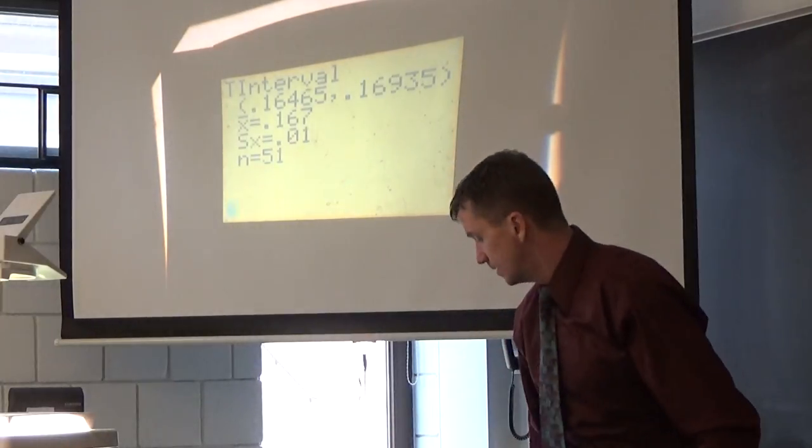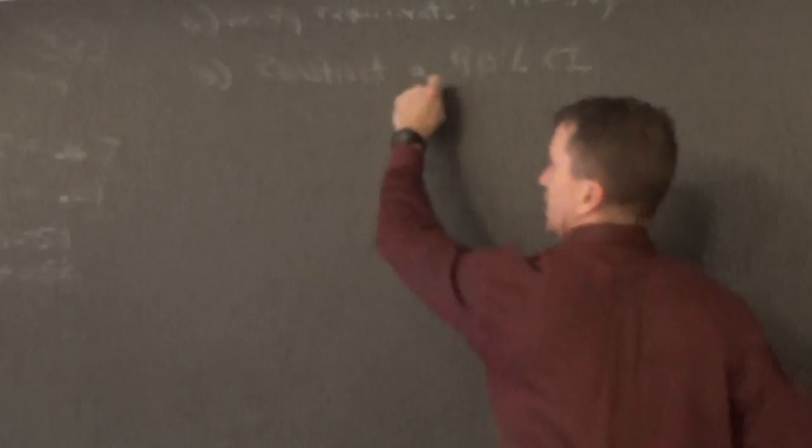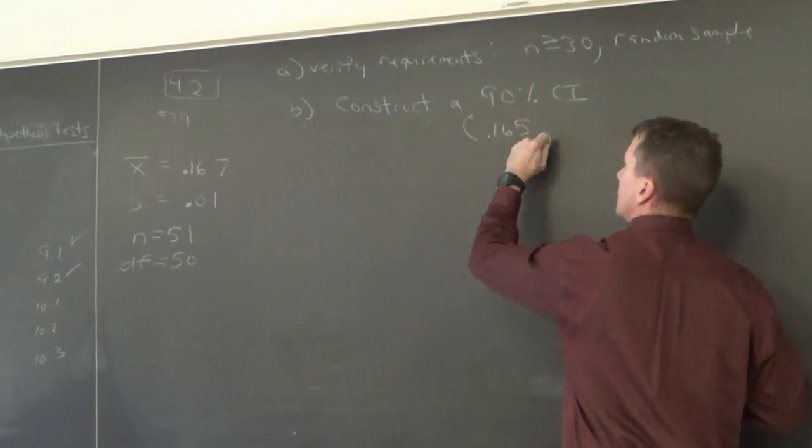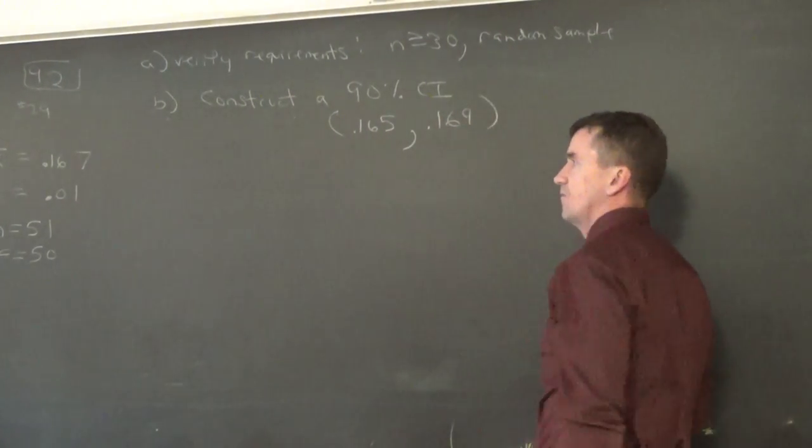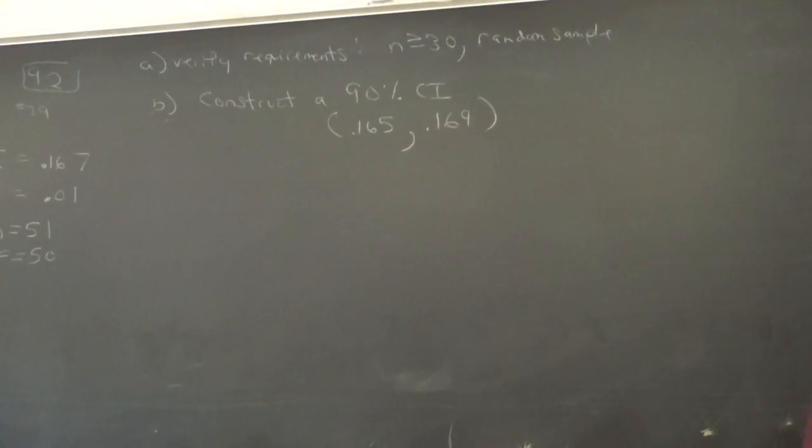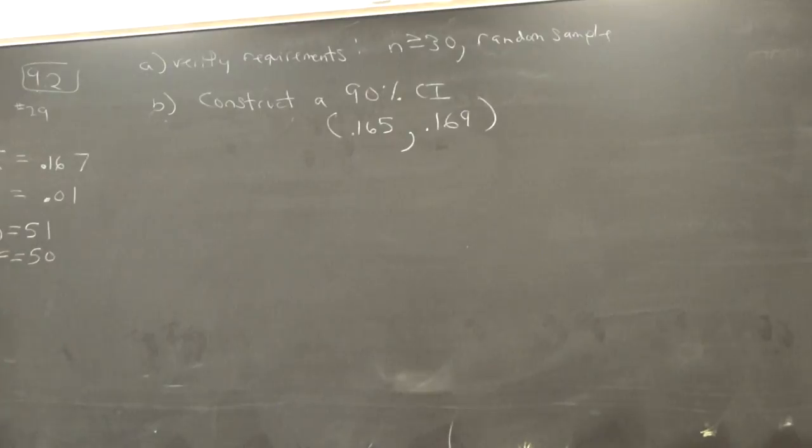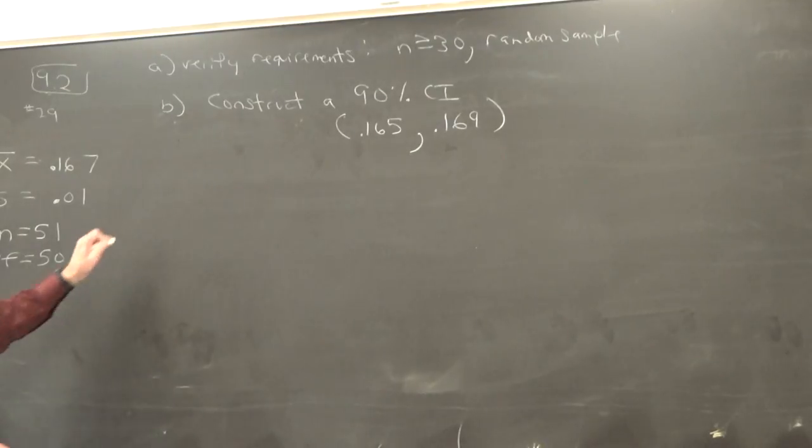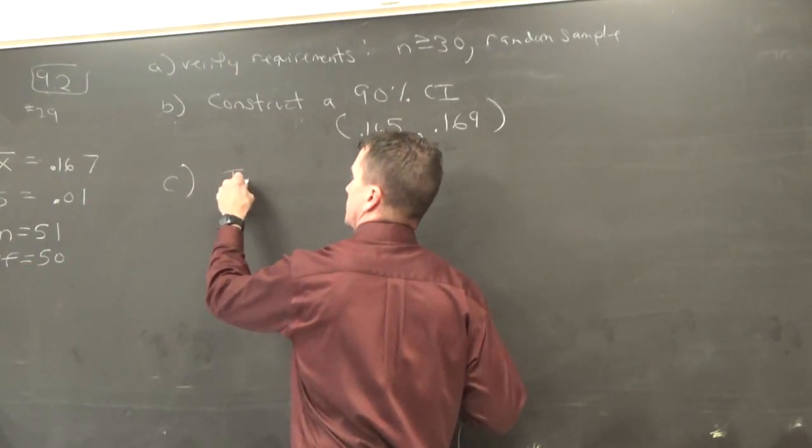All right, what is it? 0.164 to 0.65. This time, I think I'll go out to three places. 0.165 to 0.169. Boom. 0.164 to 0.169.